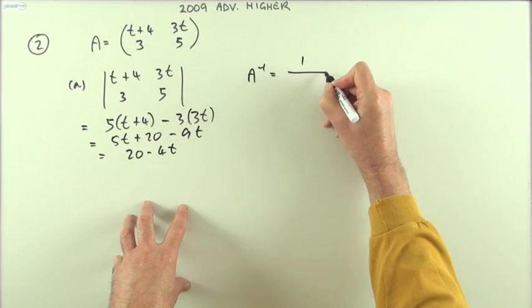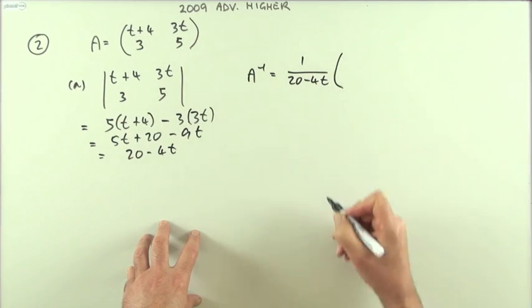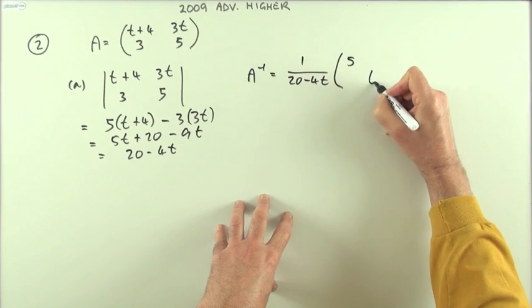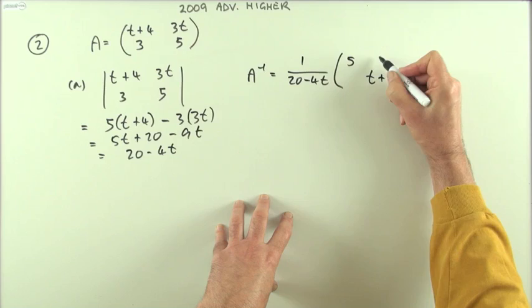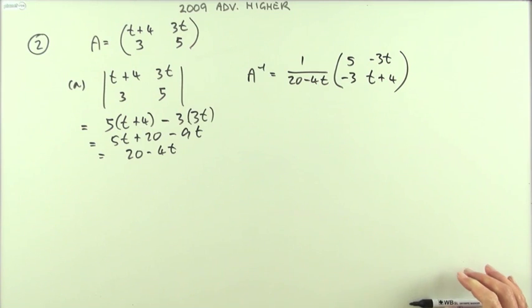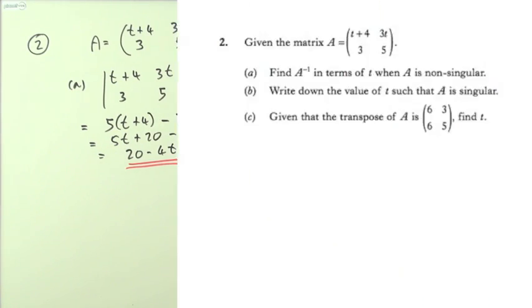Which means the inverse of the matrix will be one over the determinant, one over 20 minus 4t, times that little pattern again: reverse the main diagonal and turn the other elements in the other diagonal just into the negatives. And there it is. Three marks.